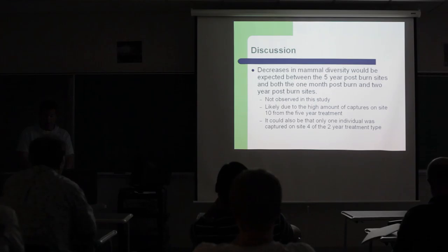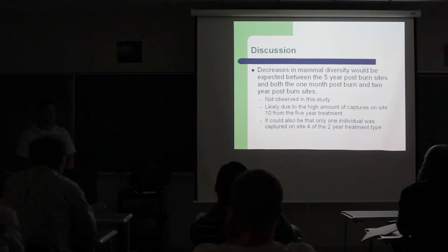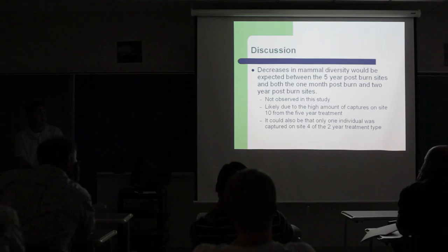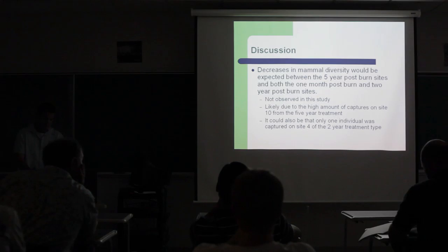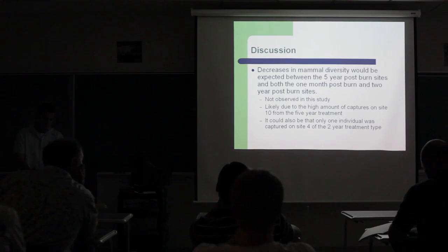It could be that only one individual was captured on Site 4 of the two-year treatment type. Site 4 had a very open canopy. There were very few tall trees. It was mostly open to the real bright sun. And I figured it could have led to an increased predation risk on the small mammals, therefore decreasing their population. They're just not going to be there. And on a side note, I don't know if this affected it or not, but the site was really covered in fire ants. Any time I put a trap out, fire ants got in there and ate anything I put in there. They would build nests in my traps. So I think that could be another reason I didn't get much on Site 4. The animals may have been there, but they're not going to go in a trap full of fire ants.